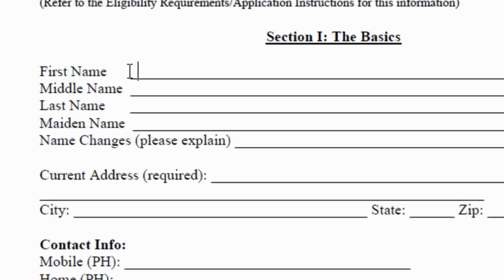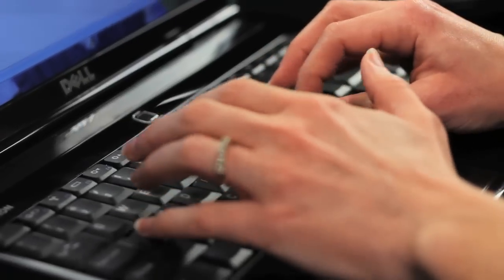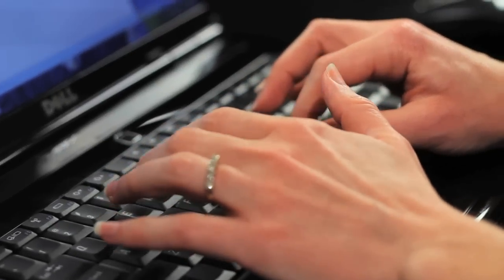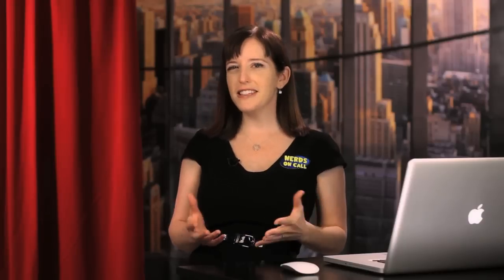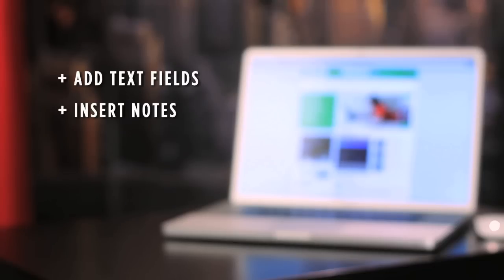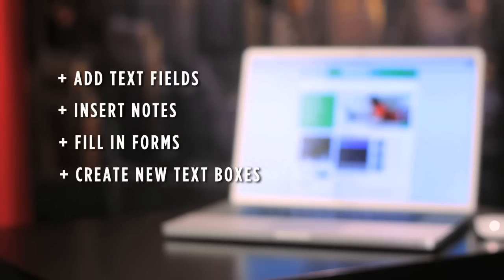So we've all been there. You have a PDF form with all these blank gray fields that need to be filled in, but Adobe Reader won't let you add any text. For easy and quick edits, I like to use an online tool, PDFEscape.com. This handy PDF editor lets you add text fields, insert notes, fill in forms, even create new text boxes, all with a couple of clicks.